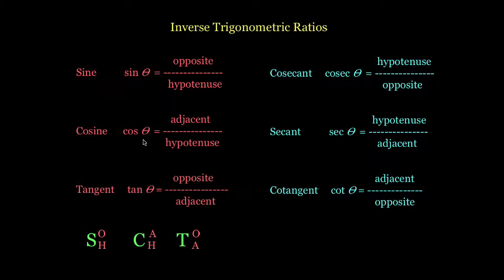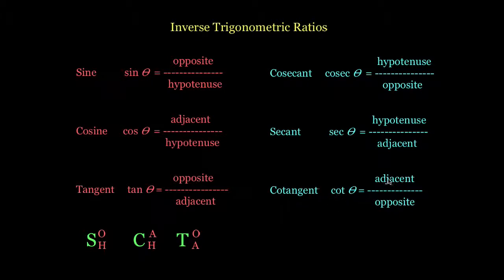Cosine, or cos theta, is adjacent over hypotenuse. The new one is secant, or sec theta, and that's hypotenuse over adjacent. For tangent, that's opposite over adjacent, while the new one is cotangent, or cot theta, and that's adjacent over opposite.